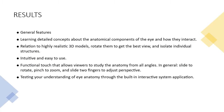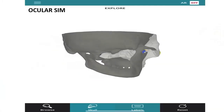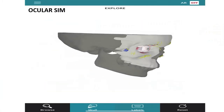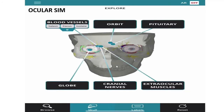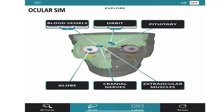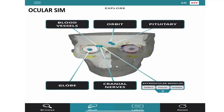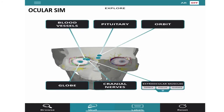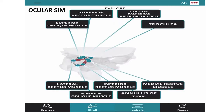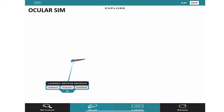There are some features that are shared by all of them. On the first one, Ocular Sim, you can see the main options: rotation and manipulation of the model, the ability to differentiate muscles and structures with labels, which you can hide, and also isolate specific structures.